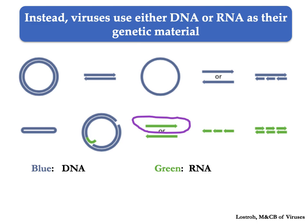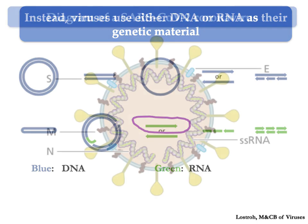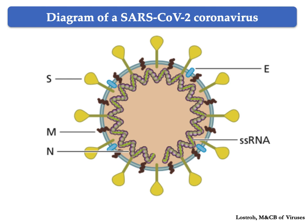Coronaviruses have a single-stranded RNA genome. This is a diagram of the virion of a coronavirus such as SARS-CoV-2. Its single-stranded RNA genome is in a coil in the center, in a complex tightly bound to a protein called N. The virion has only three other proteins: S for spike, M for membrane, and E for envelope. The outer covering of the virus is a lipid bilayer derived from the cell that produced it, and the S, E, and M proteins are part of this lipid bilayer.